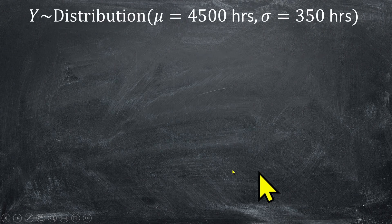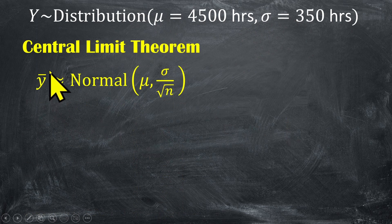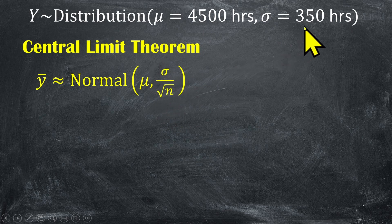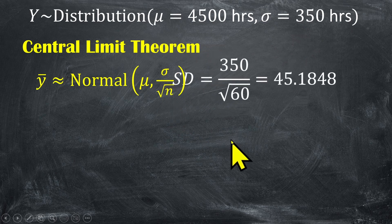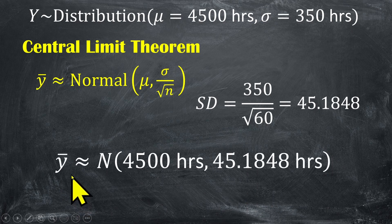We have the distribution for an individual measurement — we don't know what it is, but we know its mean and standard deviation; we have these population parameters. We can now use the central limit theorem to say that the distribution for our sample mean is going to be approximately normal. It's going to be centered at 4,500 hours, and it's going to have a standard deviation computed from sigma and the sample size. That computation is straightforward: sigma is 350, the sample size is 60, and we get a standard deviation for our sample mean of about 45 hours. So the sample mean is approximately normal, centered at 4,500 hours with a standard deviation of 45 hours.